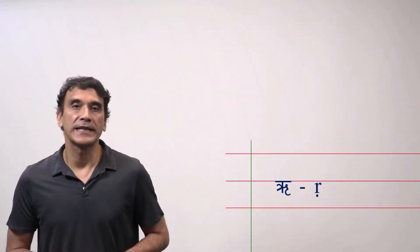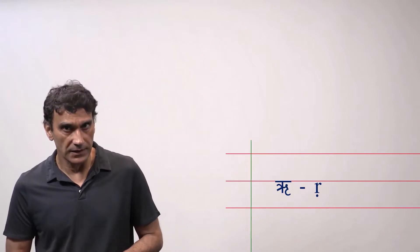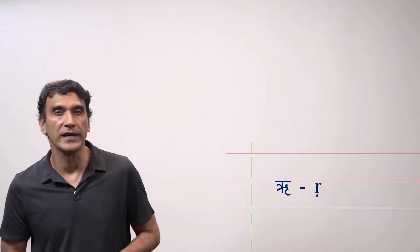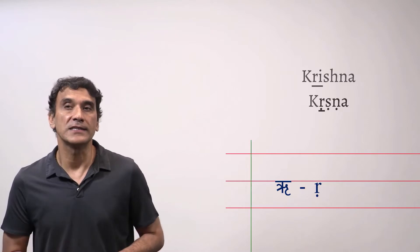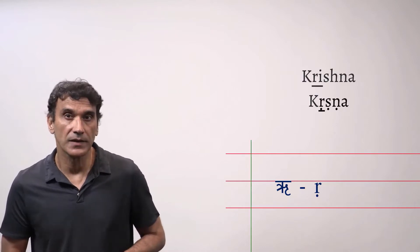The next vowel in Hindi alphabet is ri, the vocalic ri. The sound in Hindi is ri as in Krishna. It comes only in Sanskrit loan words in Hindi.